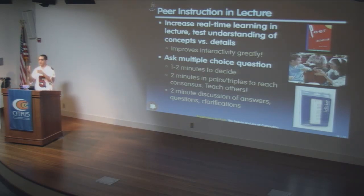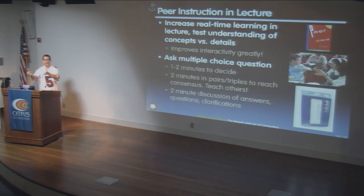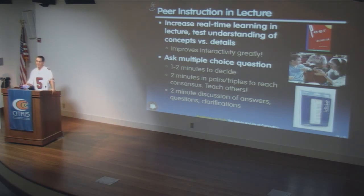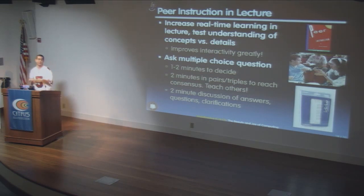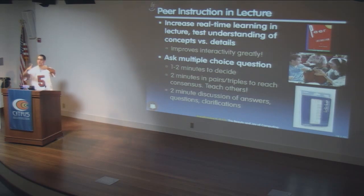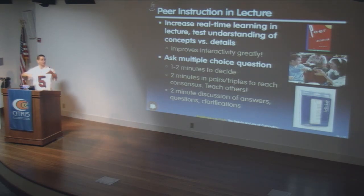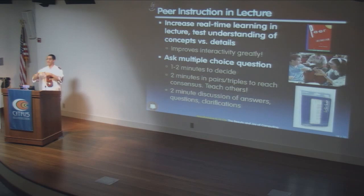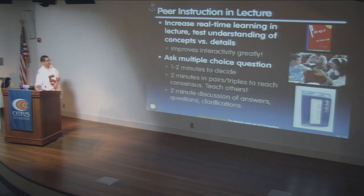In lecture we use peer instruction with clickers. I ask a multiple choice question, students vote secretly, then turn to their neighbors and argue their case for two minutes to reach consensus. Then they vote again. Usually they converge. If not, I stop class and discuss why they fell into the trap I placed. It's a great way to give feedback on whether they're getting the material, and everyone gets to respond — not just one person.